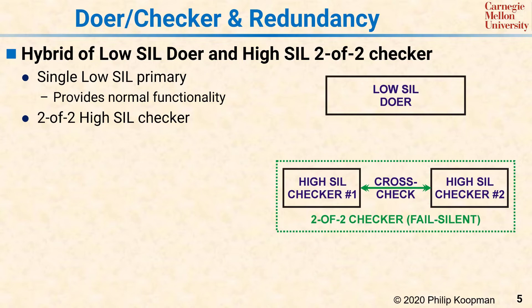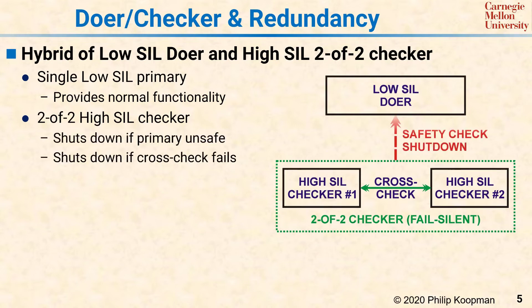That's why, for this pattern, we're using a two-of-two pair for the checker, which makes sure that the checker will catch any internal faults. That checker checks a single one-of-one doer, which operates at a lower safety integrity level. So if the doer makes a mistake, the checker will shut it down. And if either of the two CPUs in the checker makes a mistake, the other checker will shut down the whole checking block, which also results in the doer being shut down.